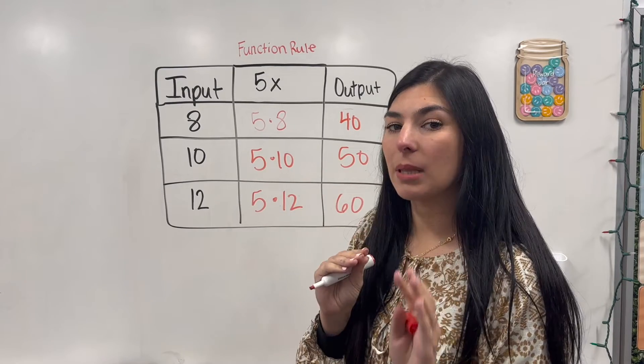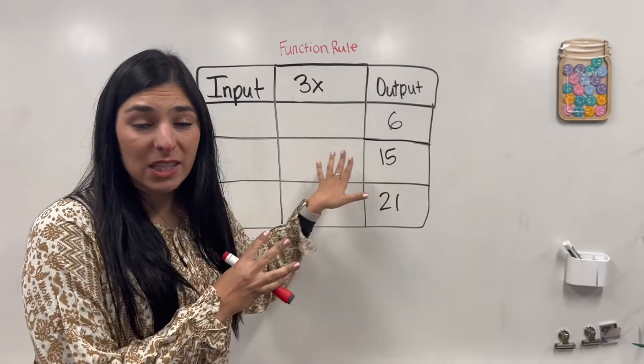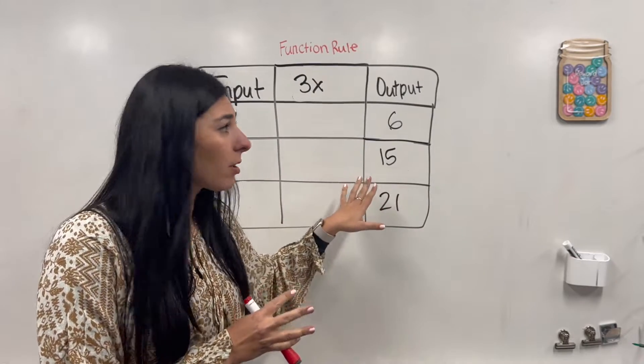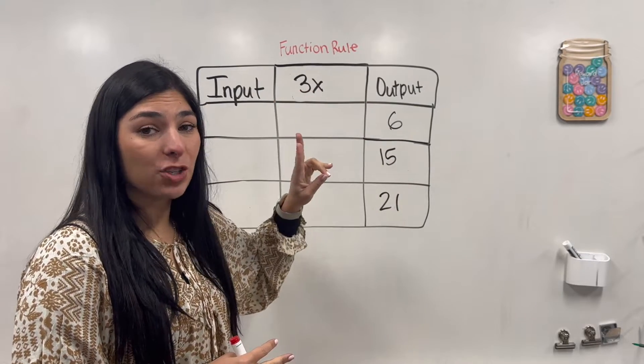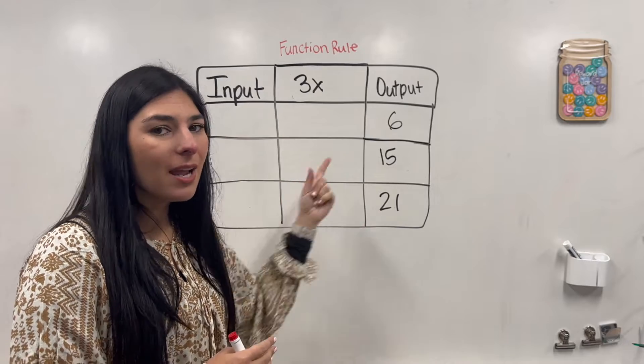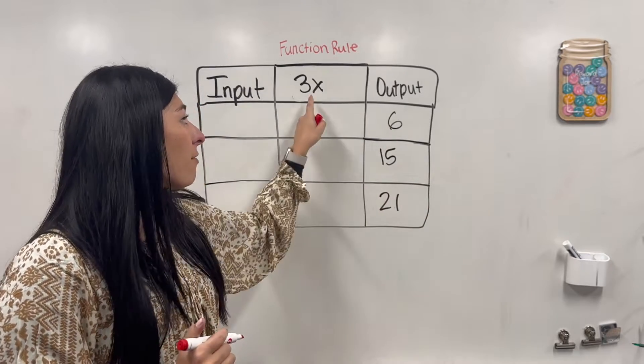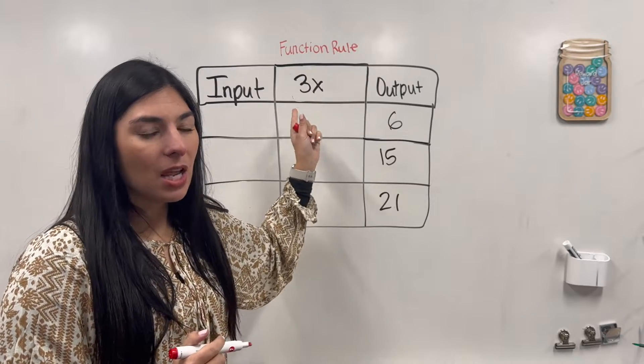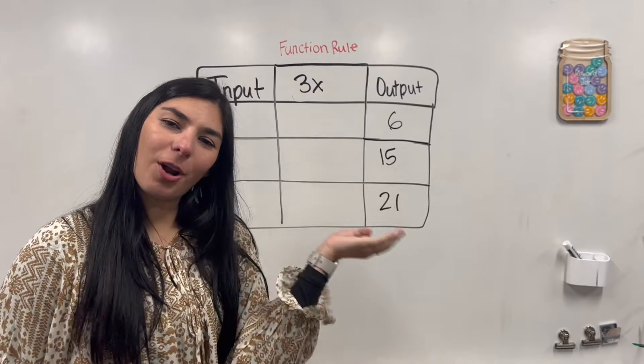But now let's get to a more complex one where I give you the output and we need to find the input. Okay, next we're working with the output. This is very similar. We have our output. We have a similar function rule, just 3x, which again is multiplication. But because I'm trying to find the input, I basically have to work backwards or do the inverse operation. So if 3x is multiplication, I need to do the inverse operation, which is division. Because multiplication and division are opposites.